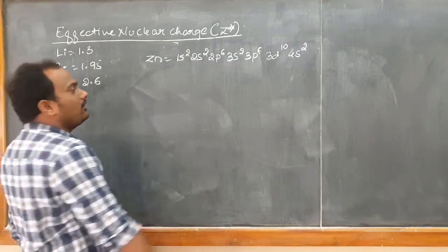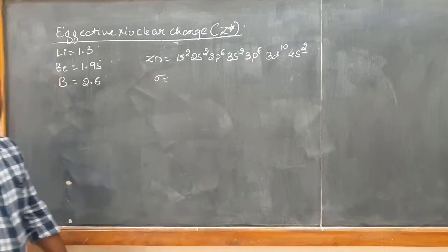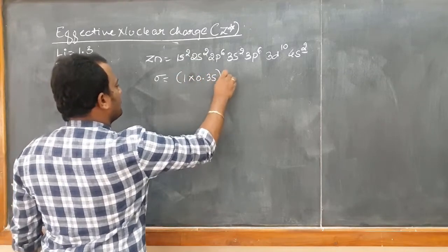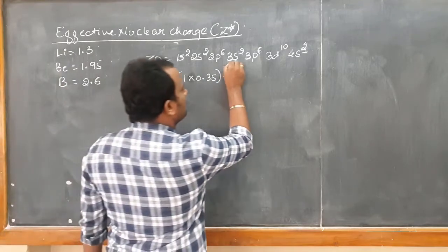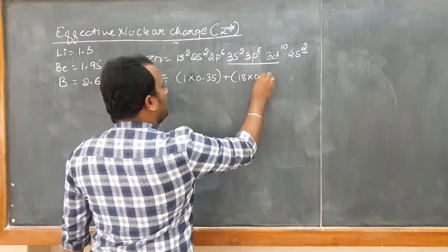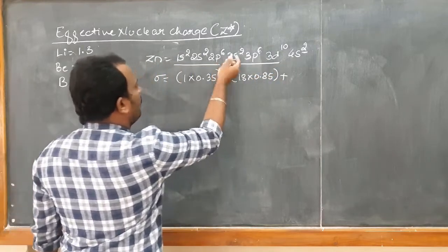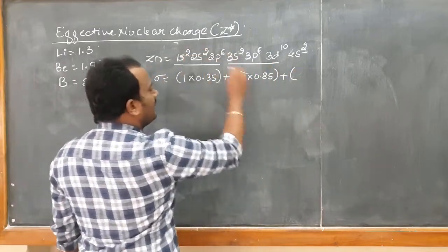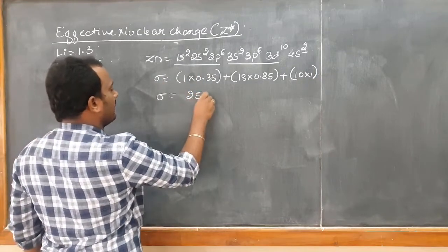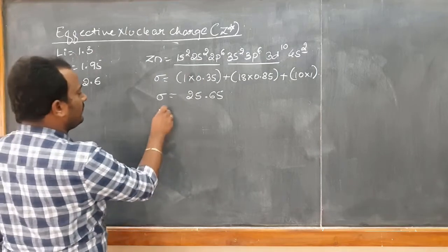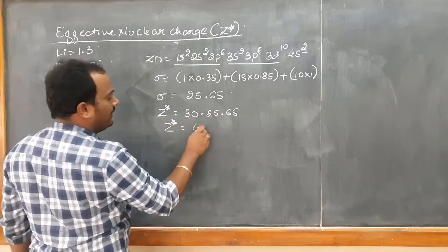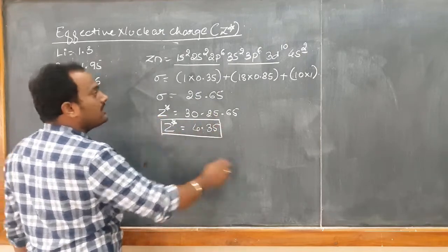Now for zinc, we calculate for the 4s last electron. Sigma = 1 × 0.35 plus 1 × 0.35 for the same group, then for N-1 which includes 3d (10 electrons), 3p (6 electrons), and 3s (2 electrons) — that is 18 × 0.85 — then for N-2 and below which has 10 inner electrons at 1 each. Sigma = 25.65. Z star = 30 minus 25.65 = 4.35 for the 4s electron.